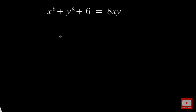Hello everyone. In this video we are going to solve a nice Diophantine equation. A Diophantine equation is an equation having more than or equal to two unknowns. The equation is given as x to the power 8 plus y to the power 8 plus 6 equal to 8 times xy, and we are supposed to find out the solution set for x and y.